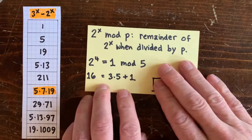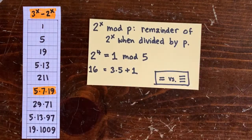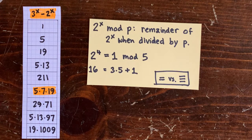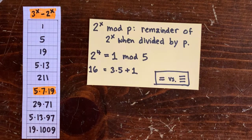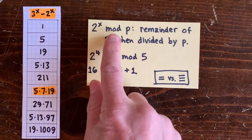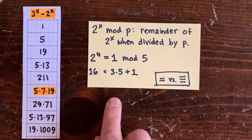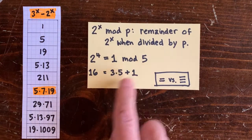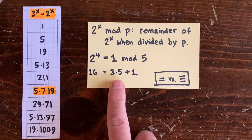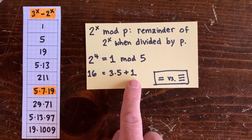When we write 2 to the x mod p, that means the remainder of 2 to the x when divided by p. Mod stands for modulo, so this is really modular arithmetic or clock math. For example, 2 to the fourth is 1 mod 5 because 16 divided by 5 leaves a remainder of 1.